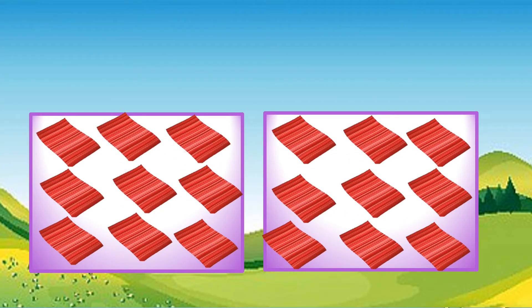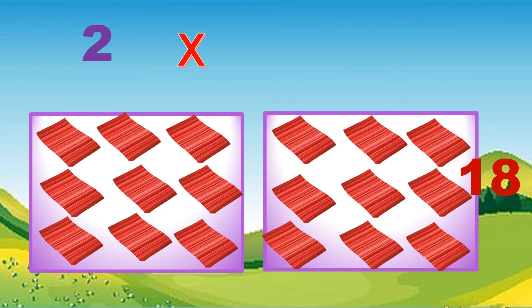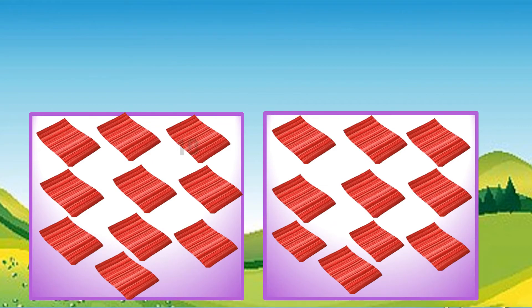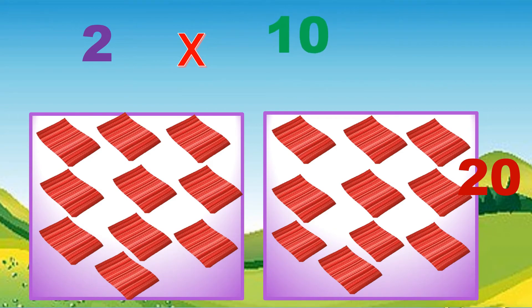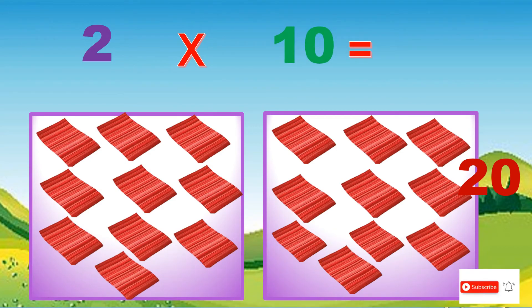Two sets of nine. Skip counting: nine, eighteen. Two times nine equals eighteen. Two sets of ten. Skip counting: ten, twenty. Two times ten equals twenty.